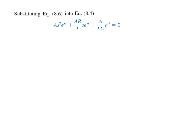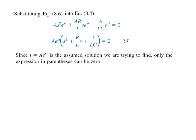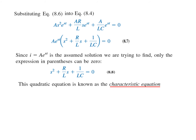Taking A·e^(st) common, we get the bracketed term. For this to equal zero, either A·e^(st) equals zero or the term in the bracket equals zero. Since A·e^(st) is the assumed current, it cannot be zero, so the term in the bracket must be zero. This quadratic equation is called the characteristic equation.